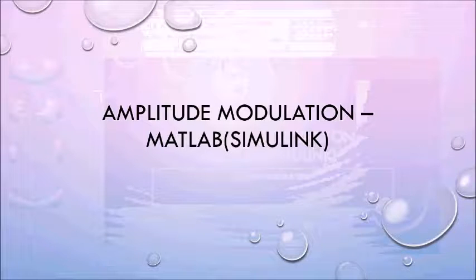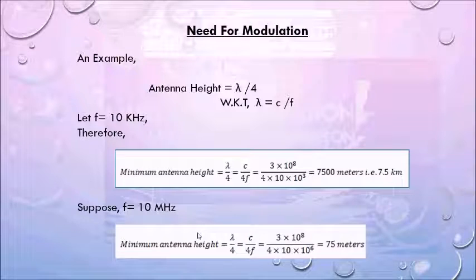For better understanding, I would like to quote an example. We know already the antenna height is equal to quarter wavelength. We know that the wavelength is nothing but C divided by F, where C is the velocity of light and F is the frequency. Now let's consider or assume our F to be 10 kilohertz. Therefore, the minimum antenna height that we require would be 7.5 kilometers, which is really unimaginable.